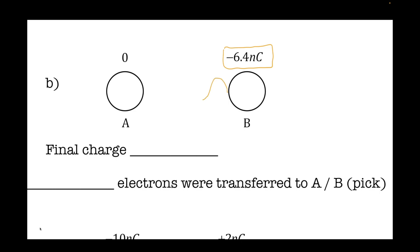When I provide a path for electrons to travel, electrons are like people — they like to be where it's warmer. So think about this: zero is less negative than negative 6.4 nanocoulombs. Electrons are going to start traveling and will keep traveling until these two spheres are the same in charge. You take charge A plus charge B and divide by 2, and that will be your final charge.